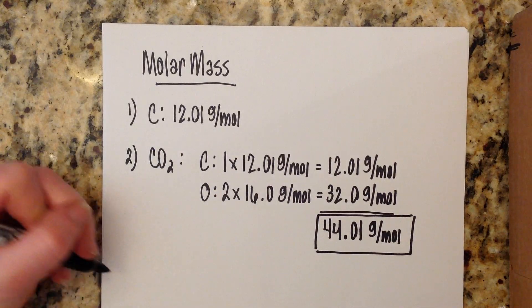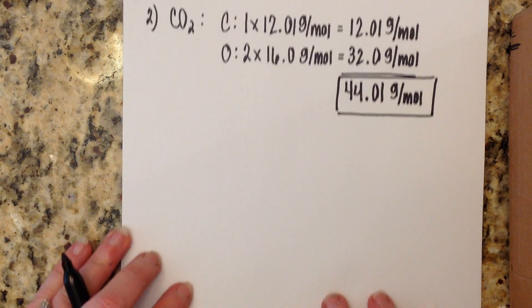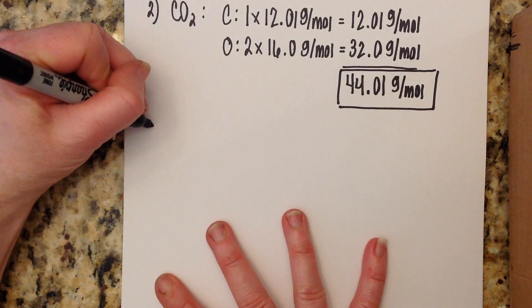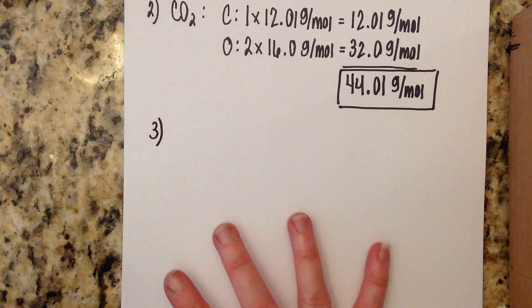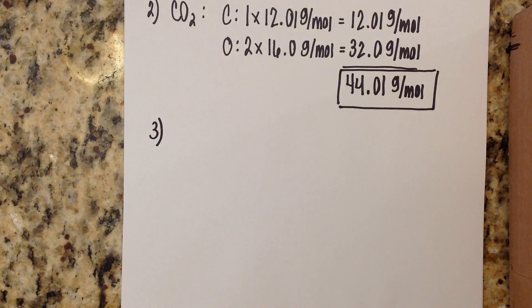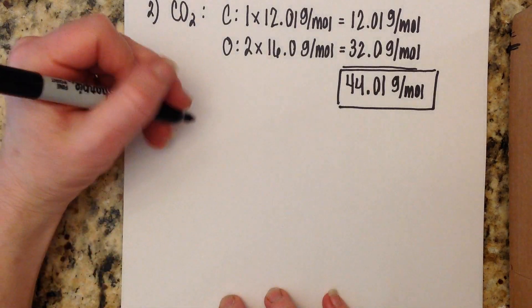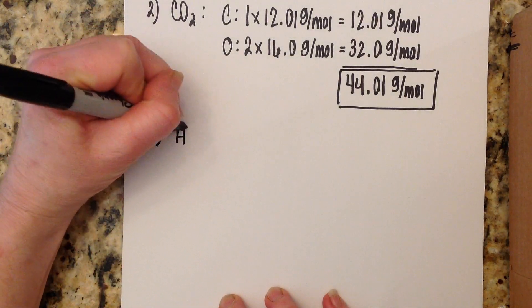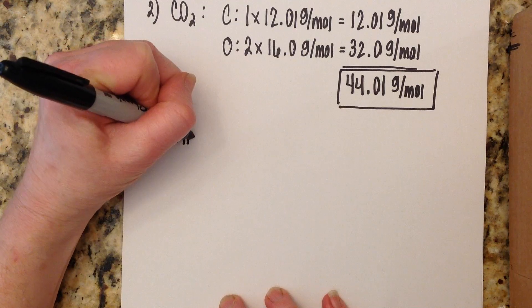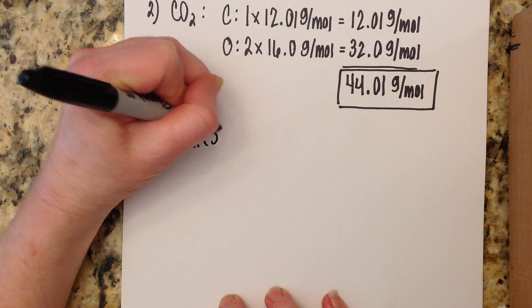Now let's look at another example. Let's look at what happens when parentheses are involved - for example, let's look at aluminum sulfate, Al2(SO4)3.